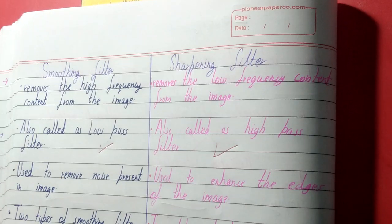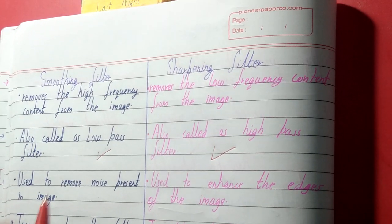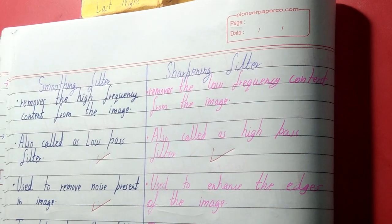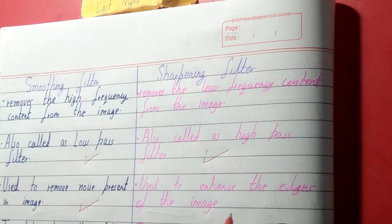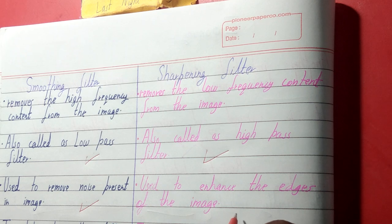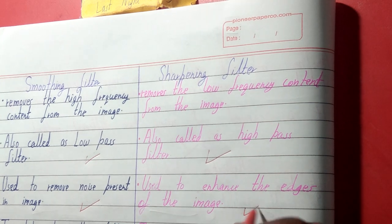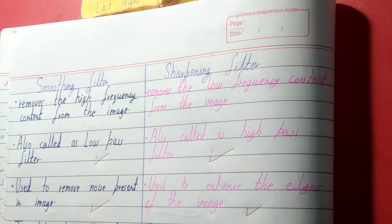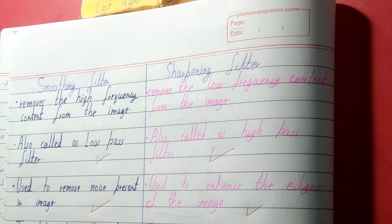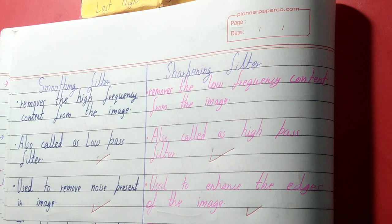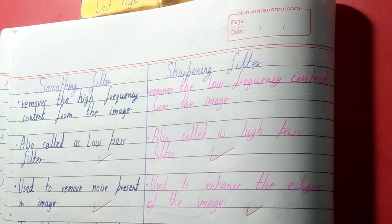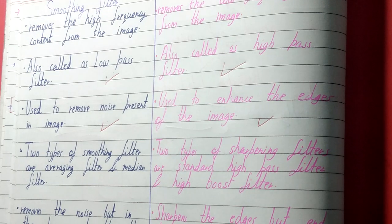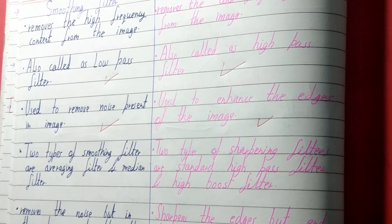The purpose of the smoothing filter is to remove the noise present in the image, but the sharpening filter is used to enhance the edges of the image. So both have a different purpose — one is for removing noise and the other is for enhancing the edges.